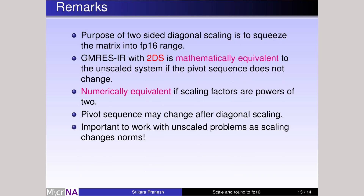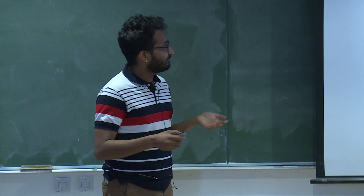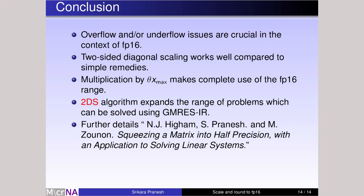A few remarks: the purpose of diagonal scaling is to squeeze the matrix into half precision, not primarily to reduce the condition number — though it does help indirectly by preventing pivot underflow. GMRES-IR with two-sided diagonal scaling, since we scale back, is mathematically equivalent to solving the unscaled problem, and numerically equivalent if the scaling factors are powers of two. However, this holds only if the pivot sequence does not change after diagonal scaling. In conclusion: underflow and overflow issues are crucial for using half-precision formats in general purpose scientific computing, and two-sided diagonal scaling works better than simpler remedies.